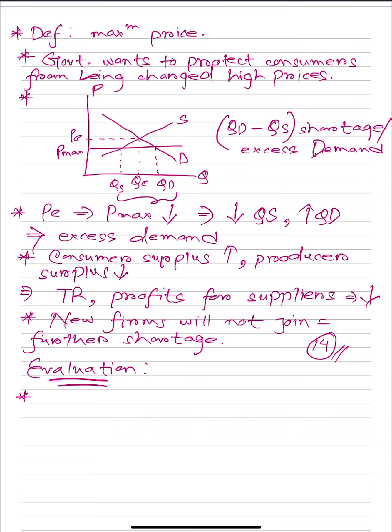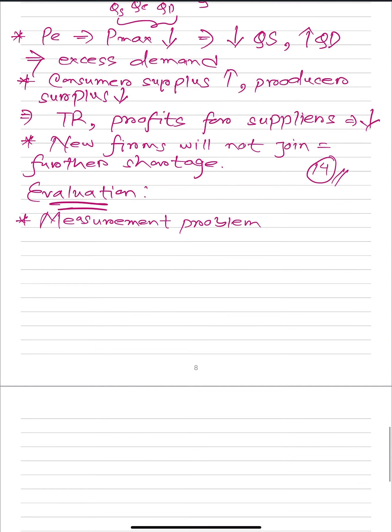The first evaluation point is that the government may face problems identifying the exact maximum price to set in order to eliminate all the issues in the market — there might be a measurement problem. They might not know exactly what price to set in order to offset all the problems in the industry.